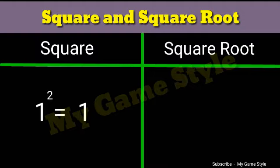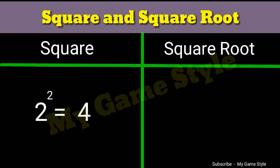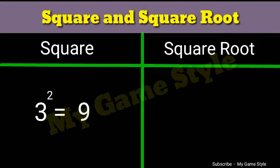1 square is equals to 1. Square root 1 is equals to 1. 2 square is equals to 4. Square root 4 is equals to 2. 3 square is equals to 9. Square root 9 is equals to 3.